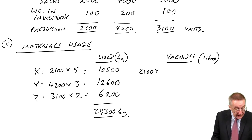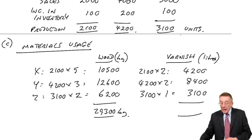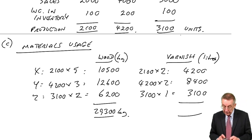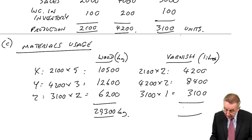In exactly the same way. X, 2,100 units, 2 litres each, so 4,200. Y, 4,200 units, each one needs 2 litres, so 8,400. And Z, 3,100 units, 1 litre each, so 3,100. And so a total of 15,700 litres.